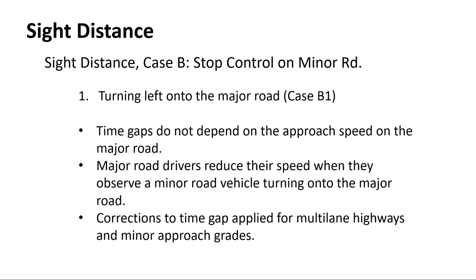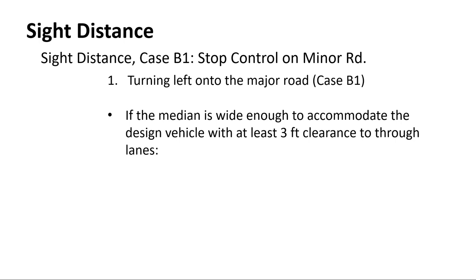Case B1 is turning left onto the major road. The time gaps on the minor road don't matter here — what matters is along the major road. We assume major road drivers will let off the gas a bit when they see someone pulling out; we don't want them to have to slow down more than about 15% of the mainline speed. Corrections apply for multiple lanes and for any grade on the minor road approach.